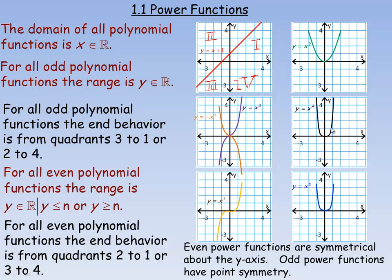The same thing would be true if we graph y equals negative x to the fifth — it would go from quadrant 2 to quadrant 4. On the right-hand side are graphs of some of the even polynomial functions: y equals x squared, y equals x to the fourth, y equals x to the power of 6. They still have a domain of the entire set of real numbers, but there is a minimum point. Since there's some minimum point, the range is always going to be the set of real numbers such that y is either less than or equal to some number n, or greater than or equal to some number n. For the basic parabola y equals x squared, the range is the entire set of real numbers greater than or equal to 0.